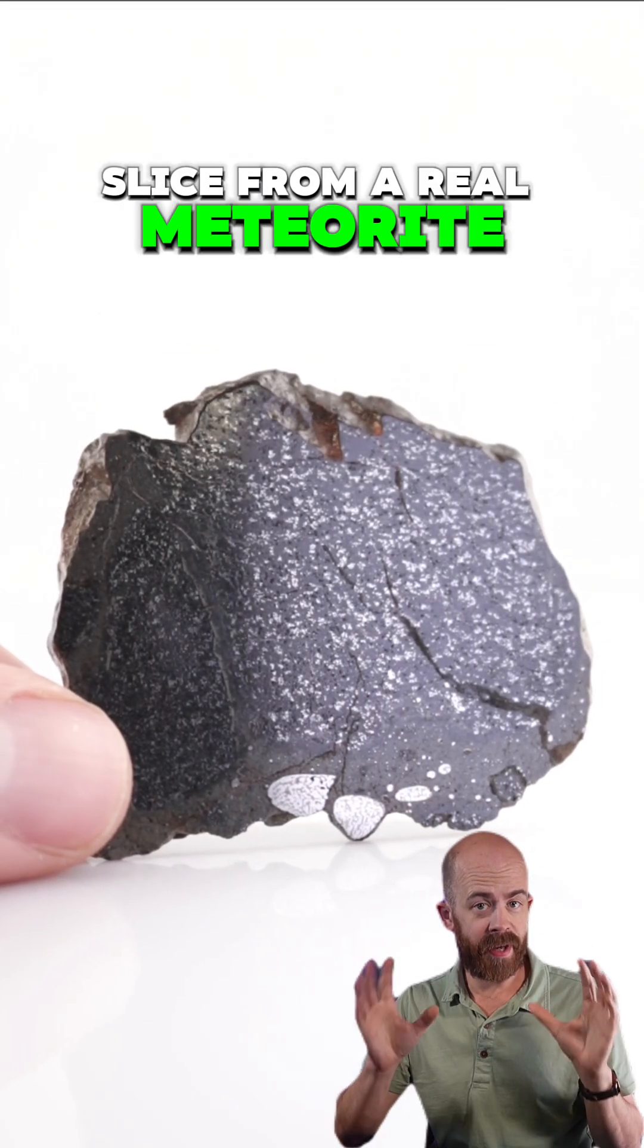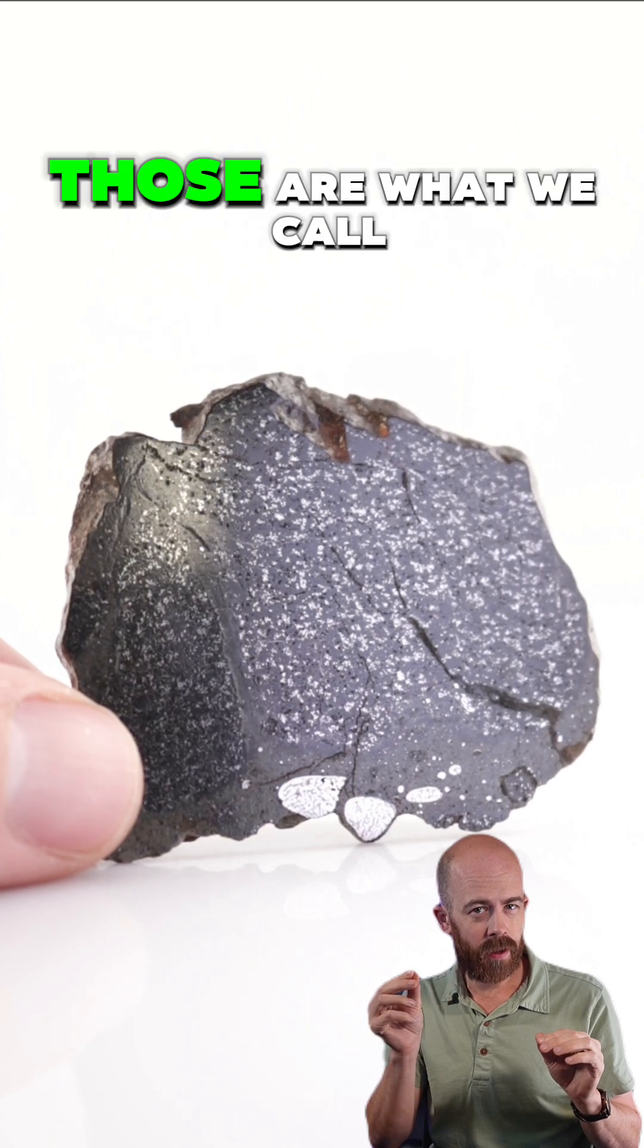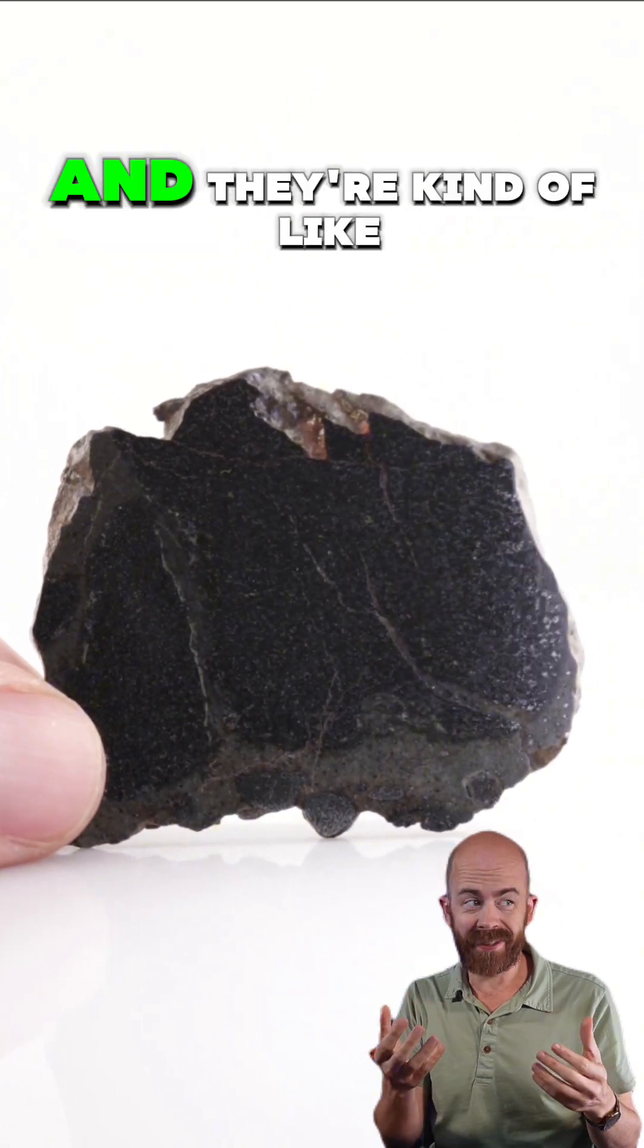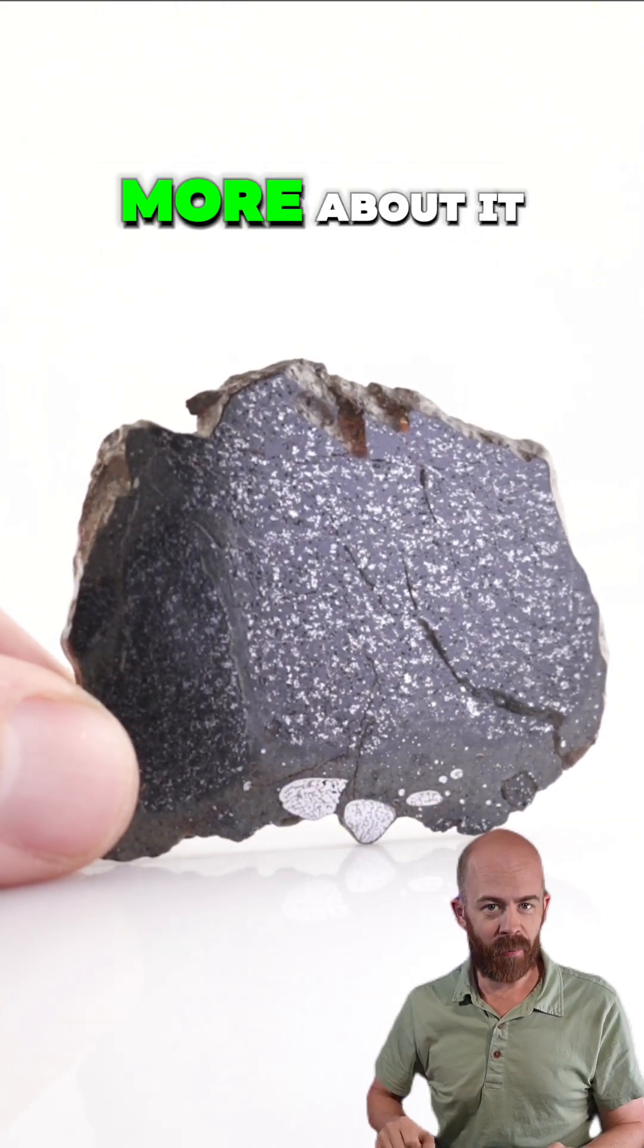Take a look at this slice from a real meteorite. Do you see those little dark gray lines going through it? Those are what we call impact melt veins, and they're kind of like geological scars that tell the story of this meteorite. Let's learn a little bit more about it.